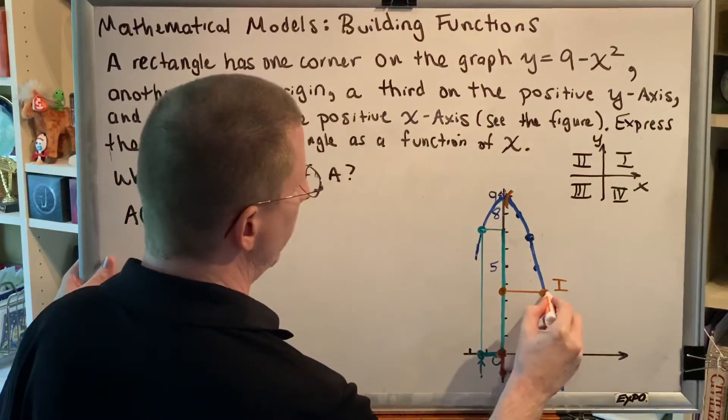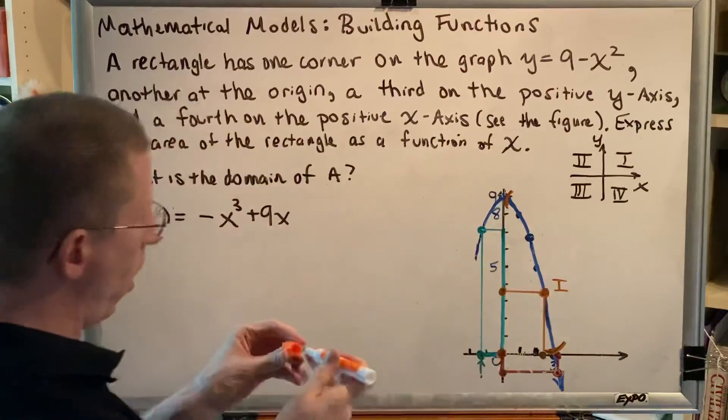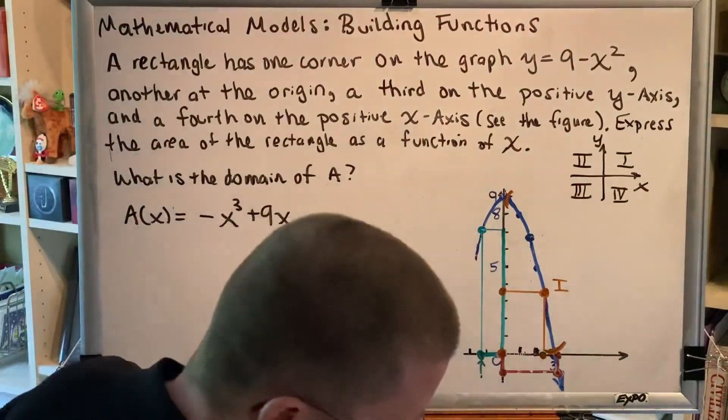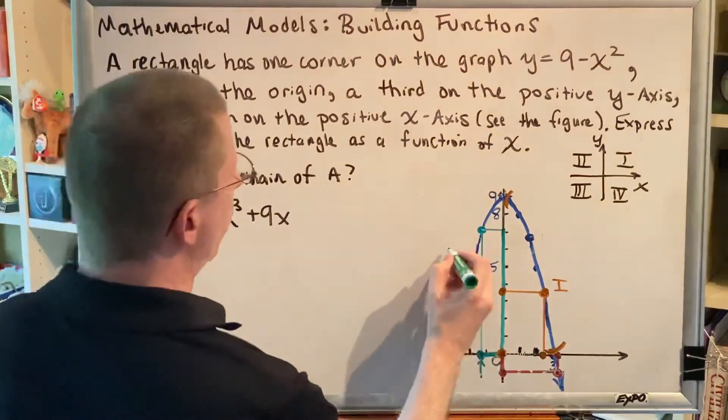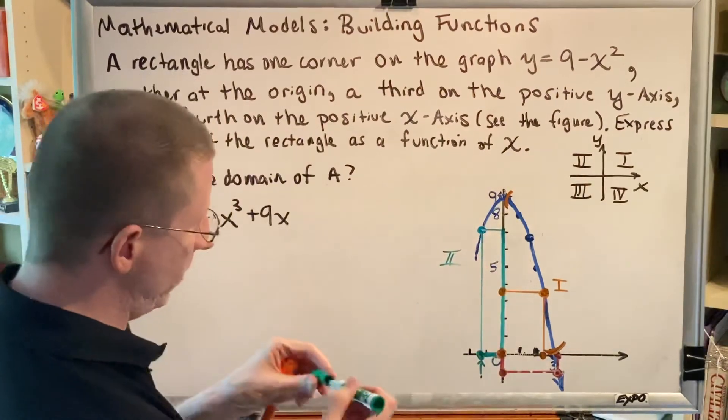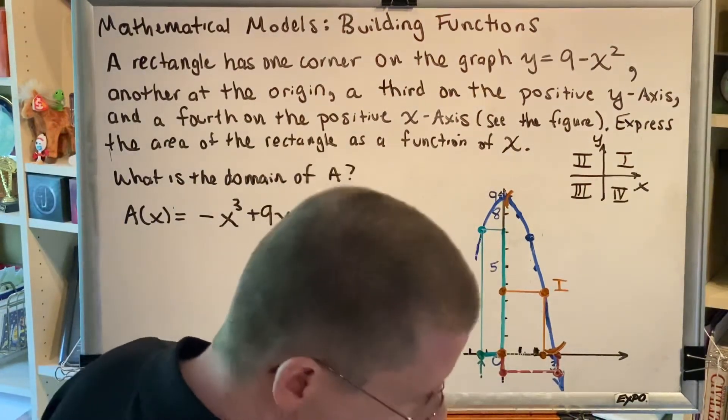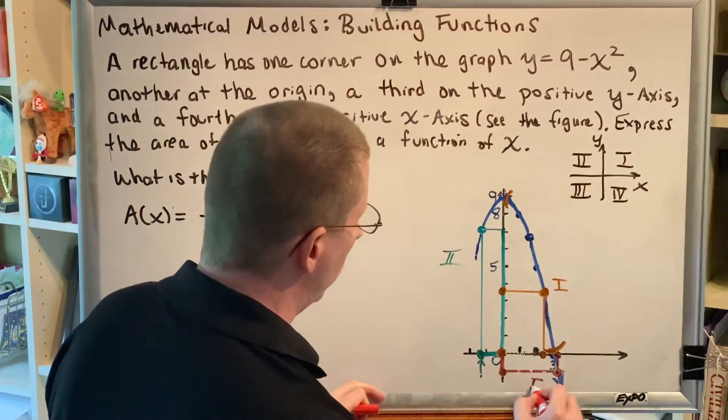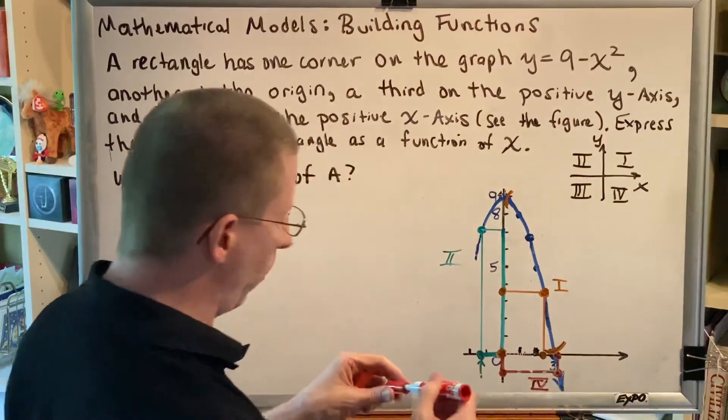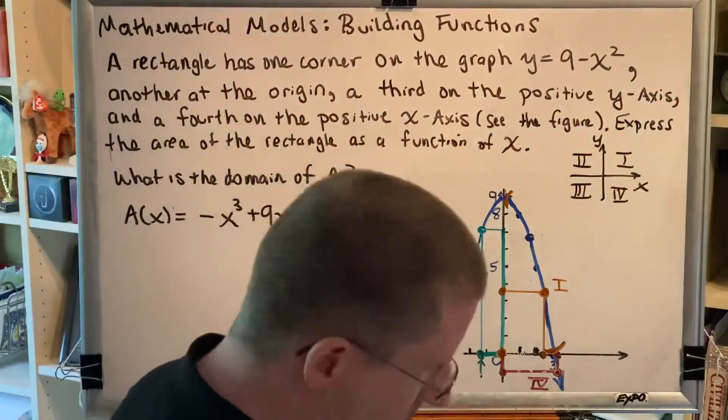If our point sitting as the upper right-hand corner is anywhere in quadrant one, then we're good. But if it's in quadrant two, or if it's in quadrant three, or if it's in quadrant four, then it's no good because it will violate the rules that are set up in the problem.